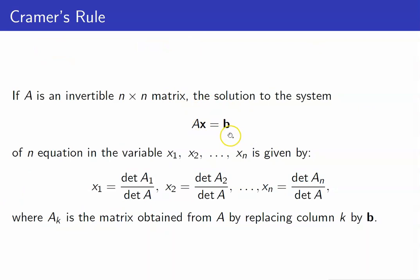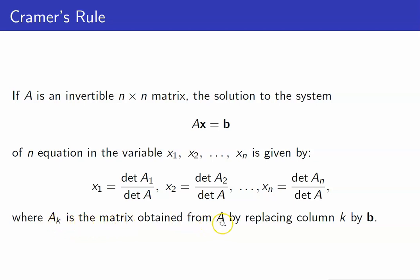Suppose that we have a system of N equations in the variables x1, x2, up to x_N, and the coefficient matrix is invertible. Cramer's rule gives us a formula to compute the values of your unknowns. Each x_i equals the determinant of A_i over the determinant of A. These A_i are the matrices obtained from A by replacing the i-th column with the column vector B.